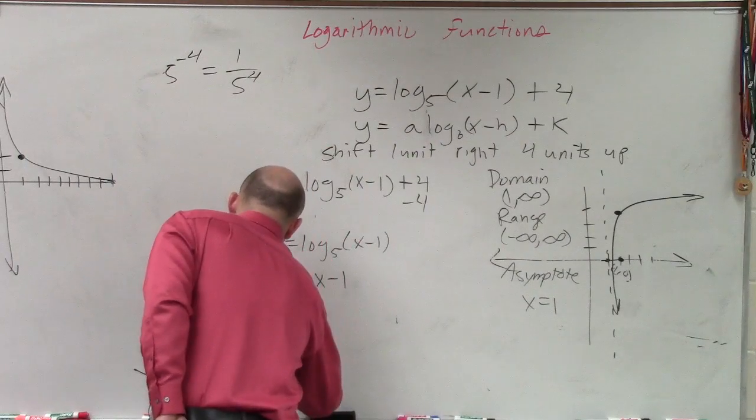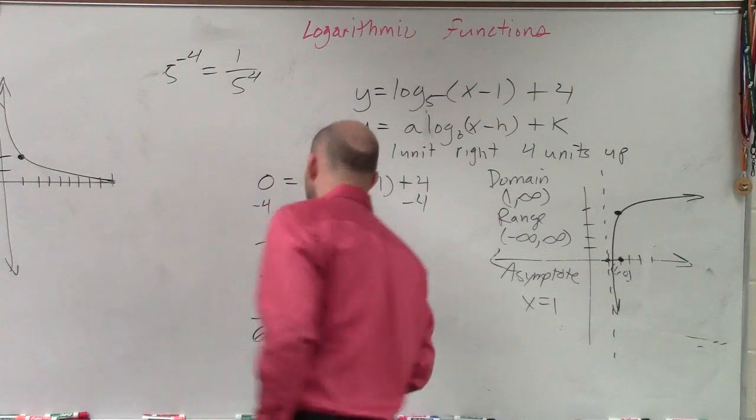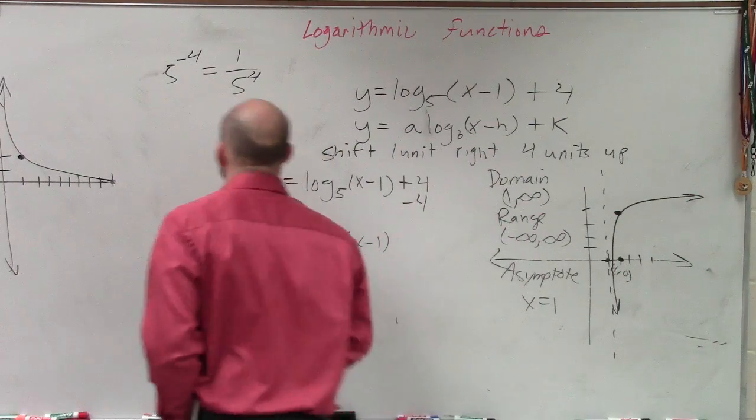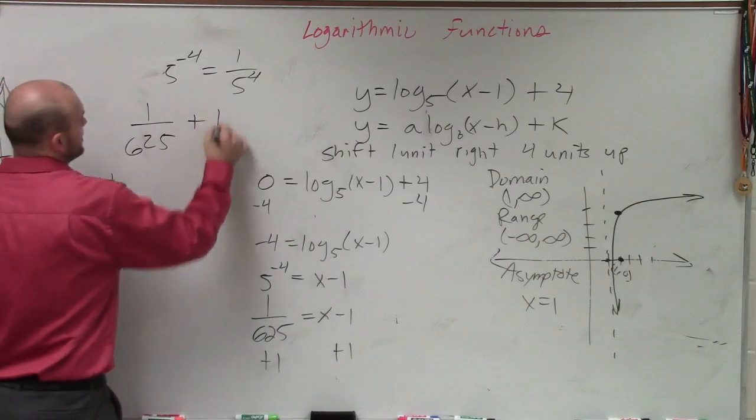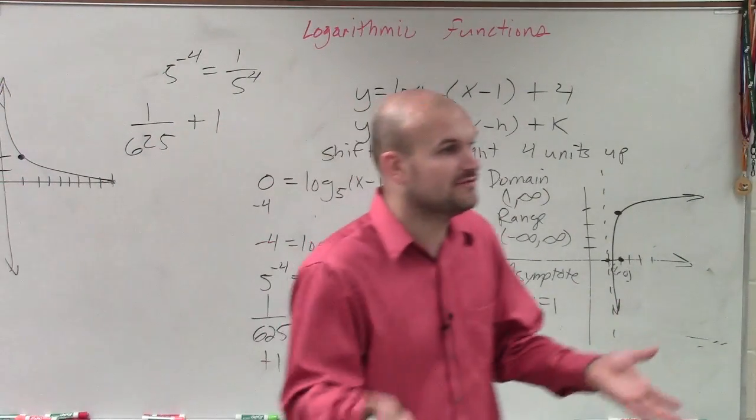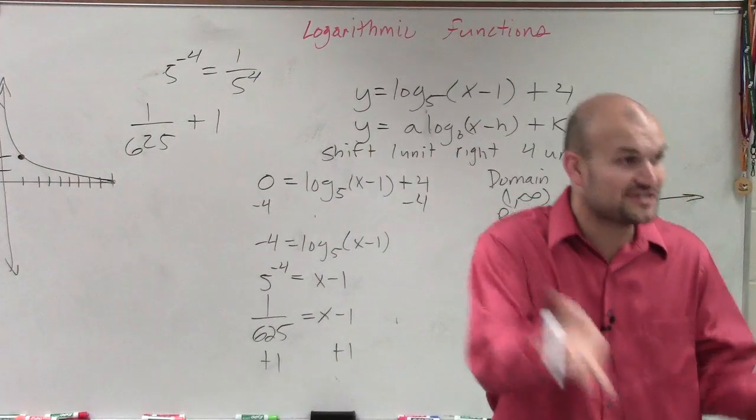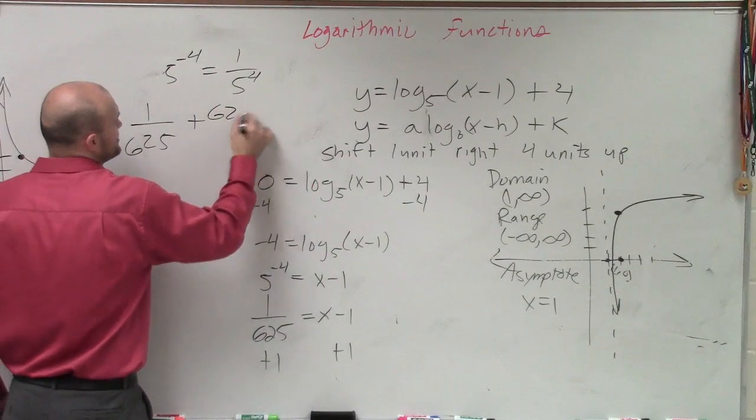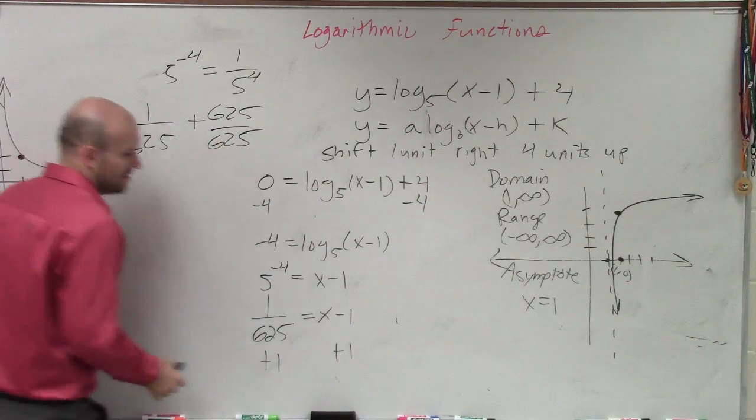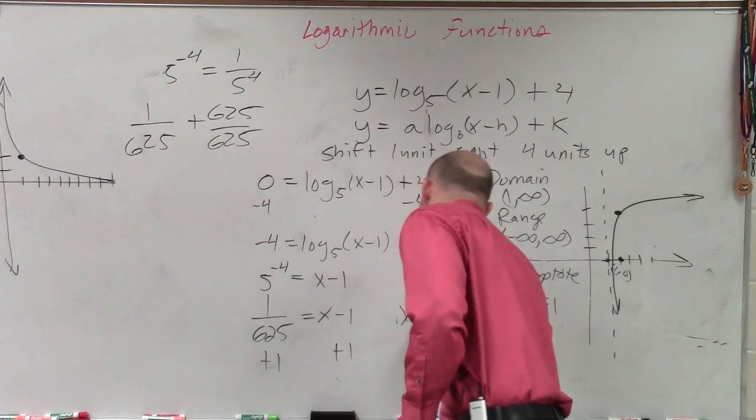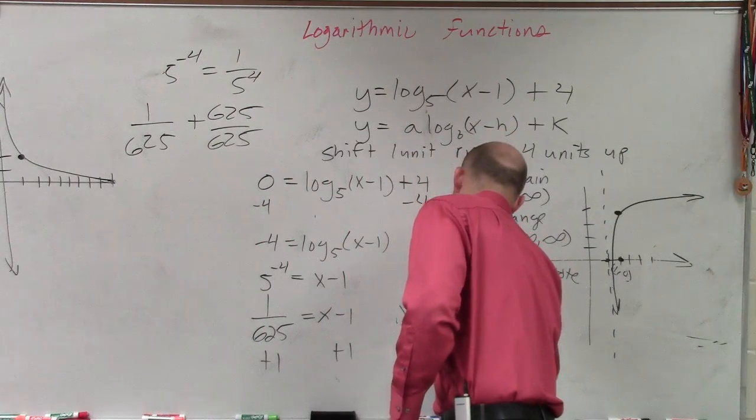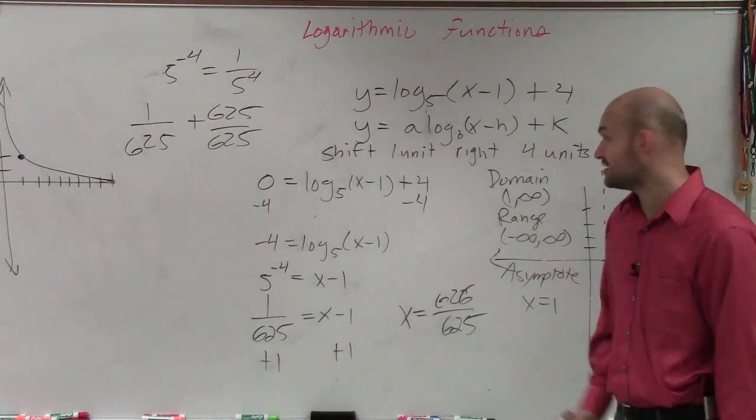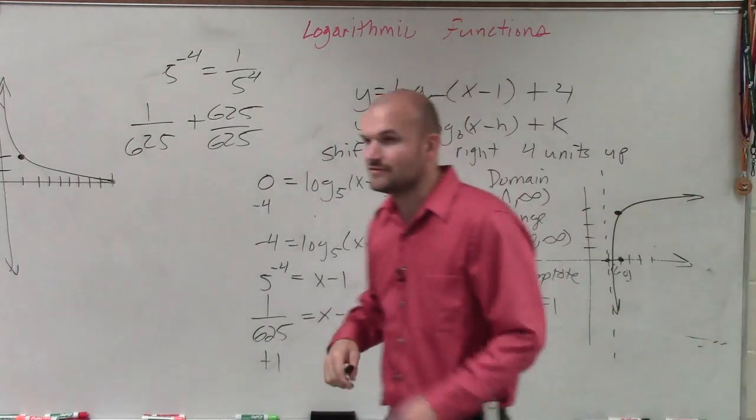So therefore, this is 1 over 625 equals x minus 1. We still need to solve for x. So you add 1 on both sides. How do you do 1 over 625 plus 1? How do you add a fraction to a whole number? You convert the whole number to a fraction with like denominators. So I change the 1 to 625 over 625. Therefore, my final answer is x equals 626 over 625. So that's the x-intercept. And that's your graph with your new asymptotes. OK?